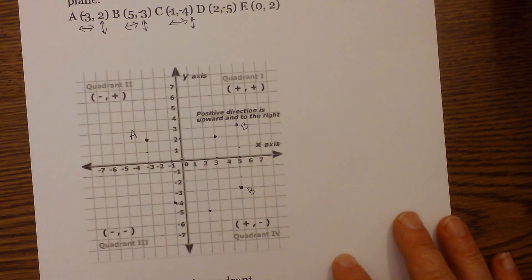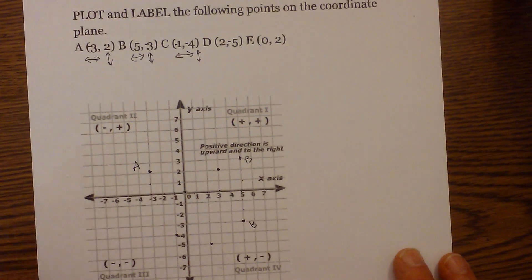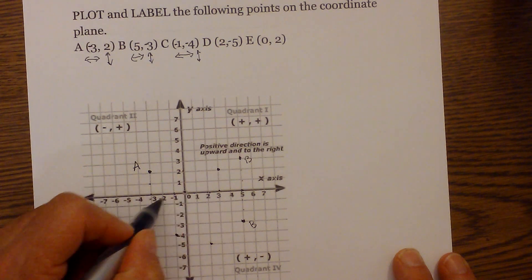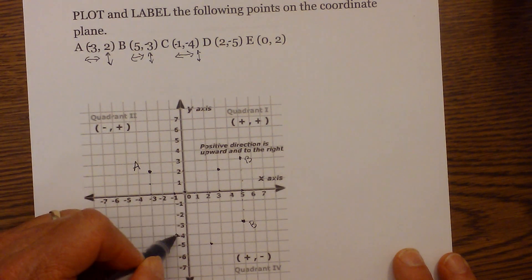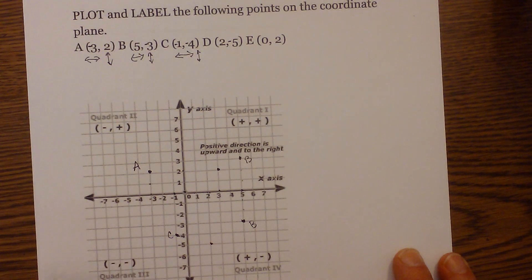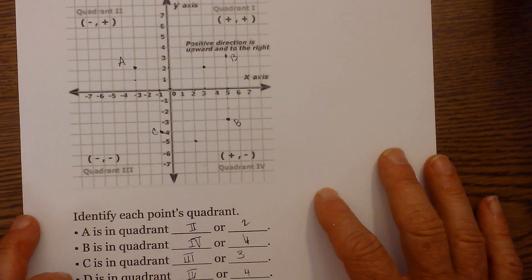Let's try letter C, negative one, negative four. Start at the origin, negative one, negative four. This would be C. It is in quadrant three.